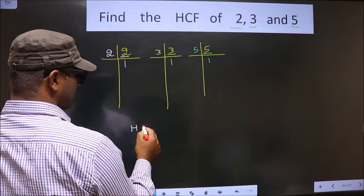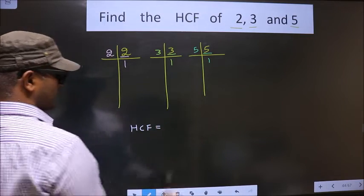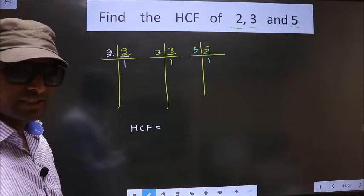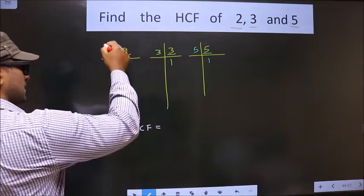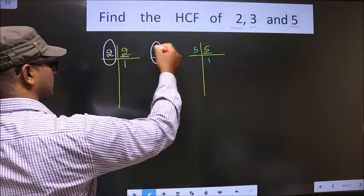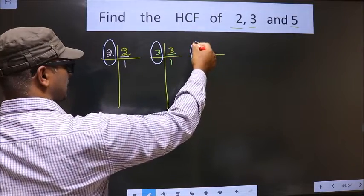So now our HCF is the product of numbers that are present here and here and also here.